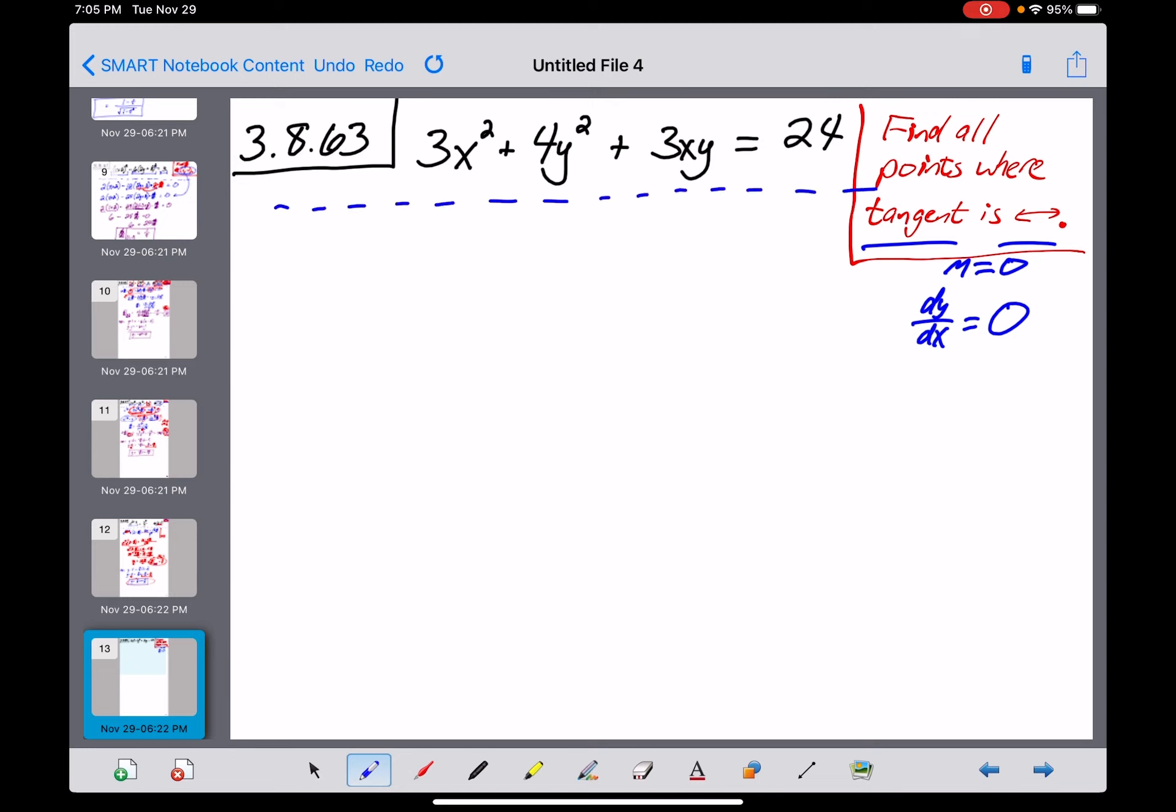Let's start differentiating here term by term. First term, derivative of 3x squared, that has just x's, no y's in it, so that's just a straightforward power rule, 6x, done. Now, power rule here as well, but because it's a y, there's a little wrinkle at the end there. There's going to be an 8y and then times the dy dx from implicit differentiation.